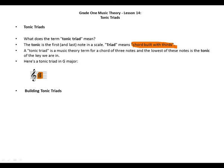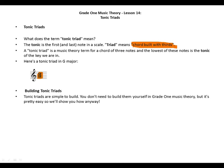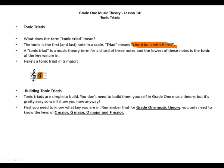Building tonic triads. Tonic triads are simple to build. You don't need to build them yourself in Grade One music theory, but it's pretty easy so we'll show you how anyway. First you need to know what key you are in. Remember that for Grade One music theory, you only need to know the keys of C major, G major, D major, and F major.